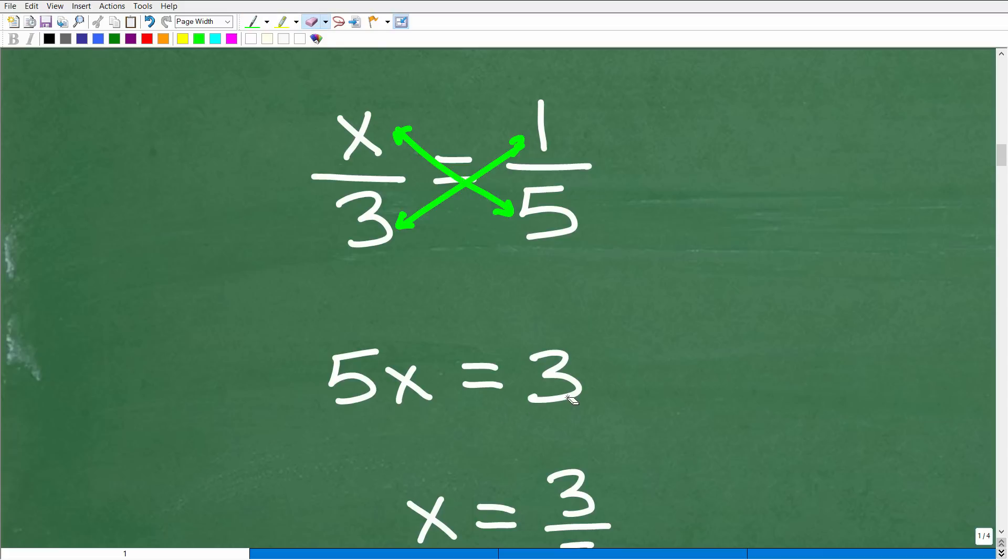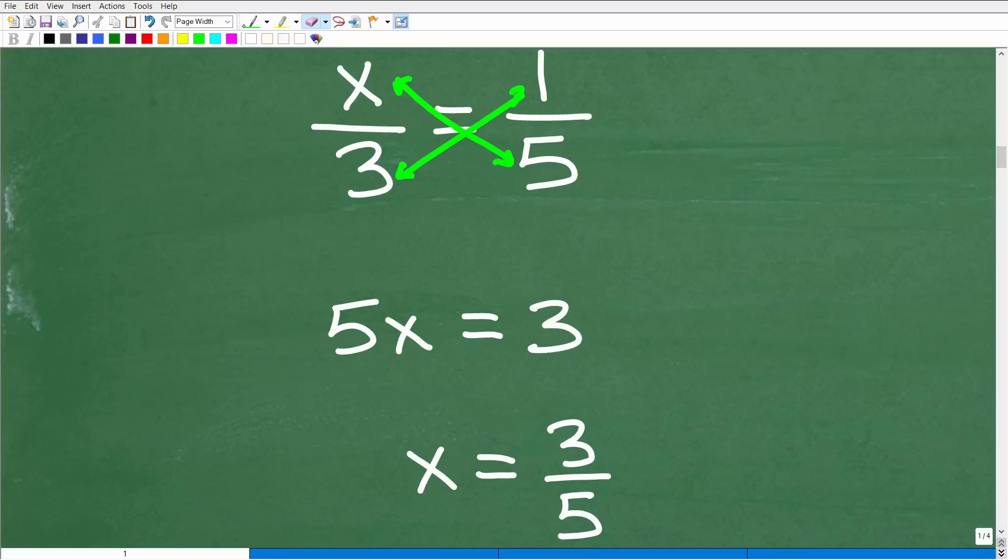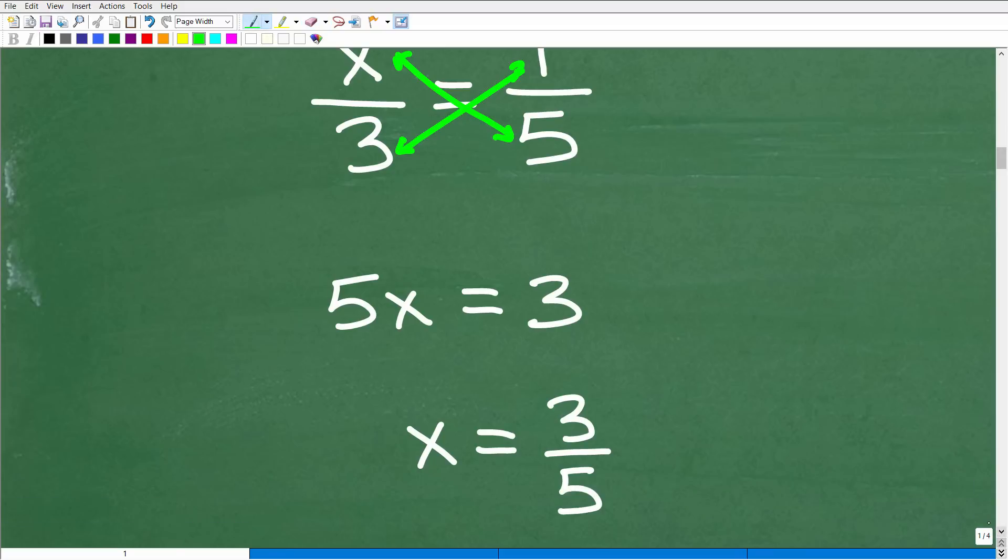All right. So hopefully you're up to speed on your basic algebra. How do we solve for x? Pretty easy. All we need to do is divide both sides of the equation by 5. So 3 divided by 5 or 3 fifths. 3 fifths is the answer.